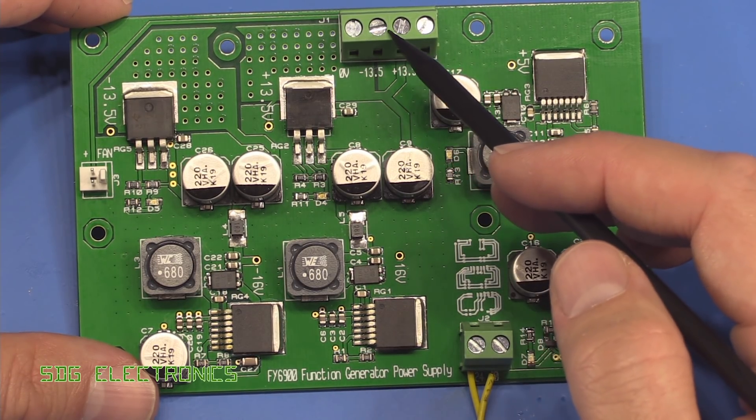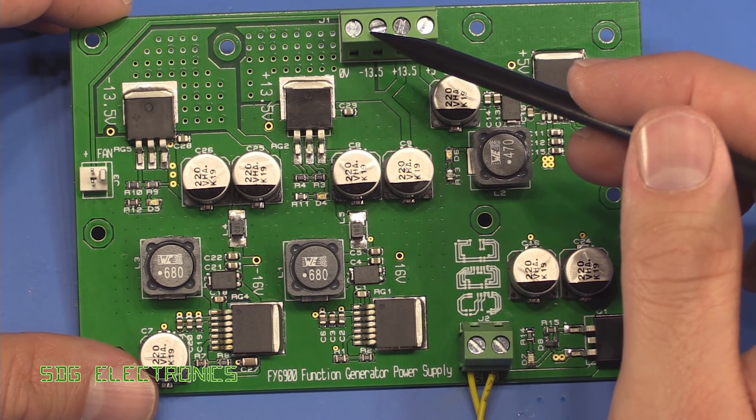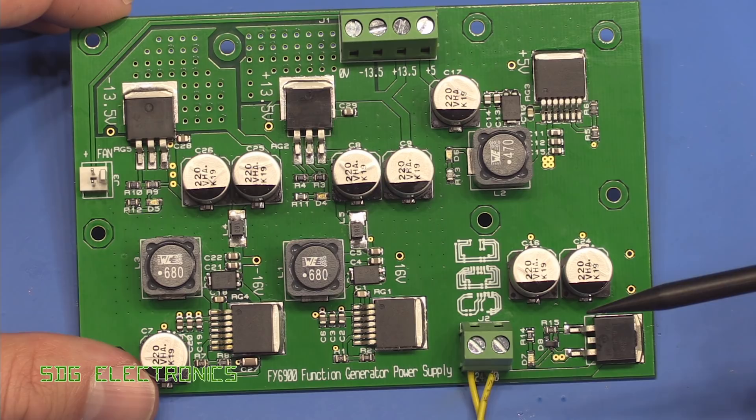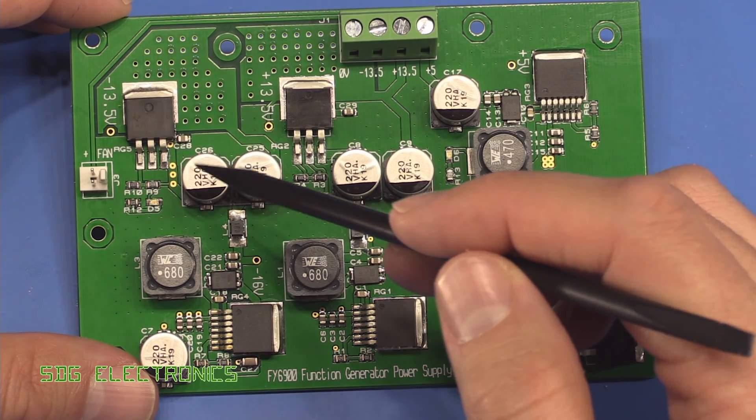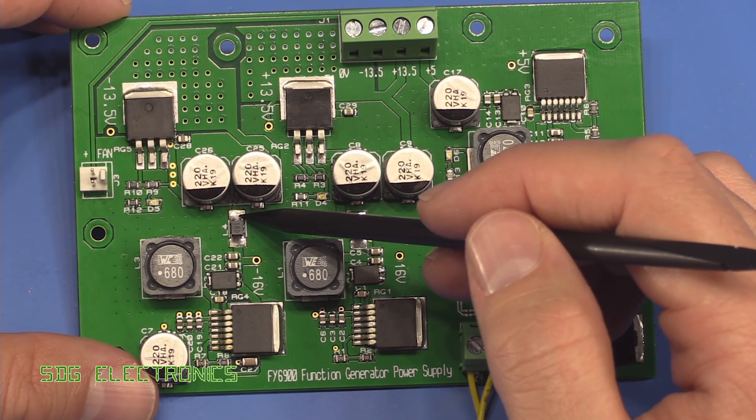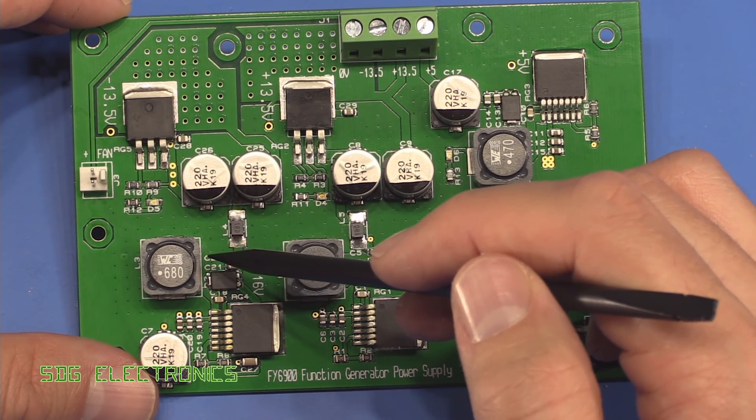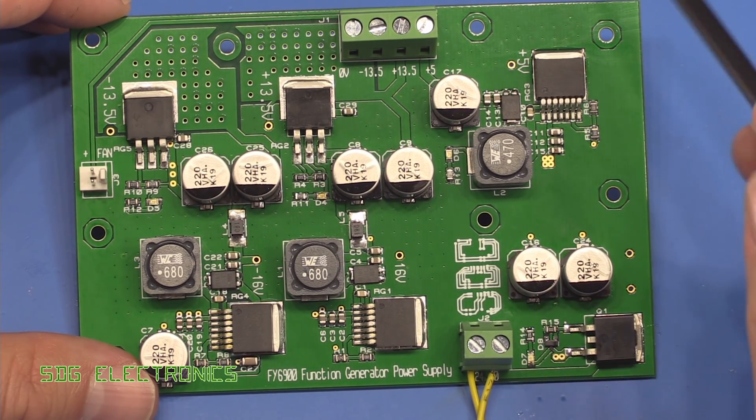We'll individually load up each of the rails, just make sure that everything behaves properly and have a look at what the waveforms look like on the oscilloscope at various points in the circuit. We'll obviously look at the output, we'll look after this inductor before the regulator, and we'll also look before the inductor, so directly on the output of the switching regulator.